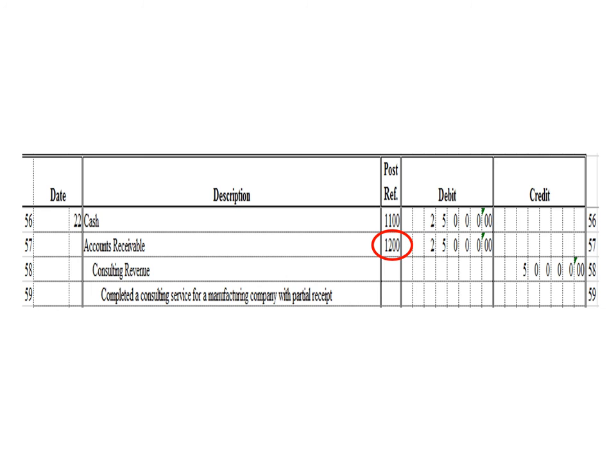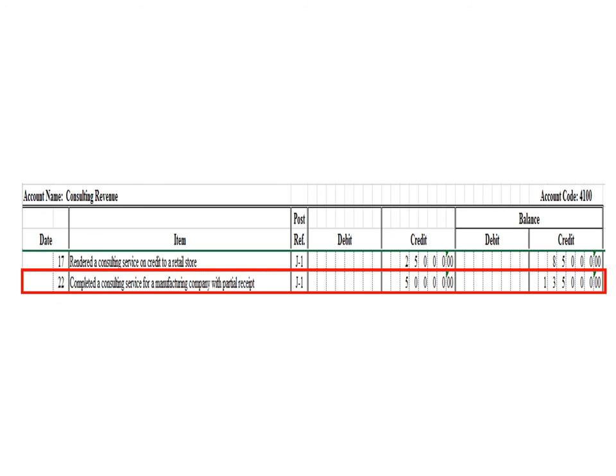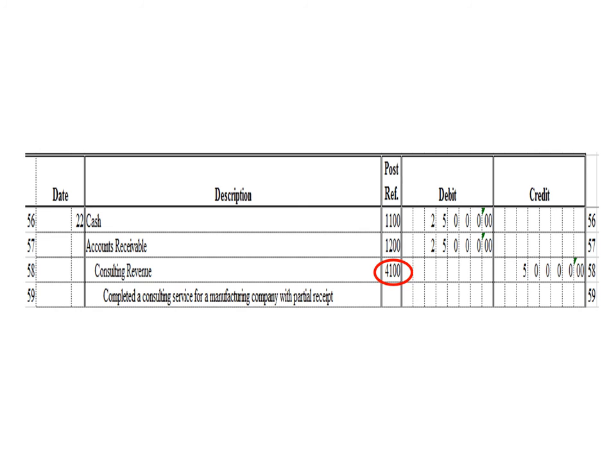Let us post the credit entry — a credit to consulting revenue 50,000 pesos. In the consulting revenue ledger, we write date 22, description: completed a consulting service for a manufacturing company with partial receipt, posting reference J1. Under the credit column, write 50,000 pesos. The balance is 135,000 pesos — previous credit balance 85,000 plus 50,000 credit. As of March 22, the consulting revenue ledger has a credit balance of 135,000 pesos. After posting, write posting reference 4100.